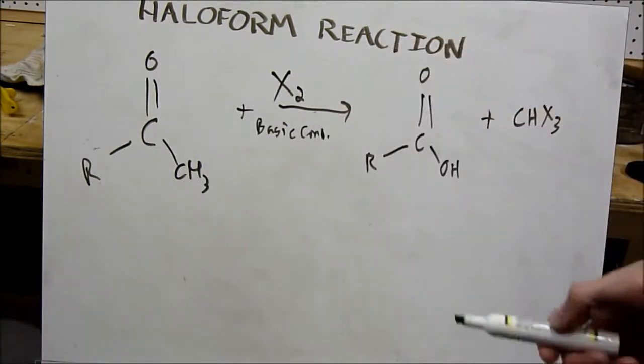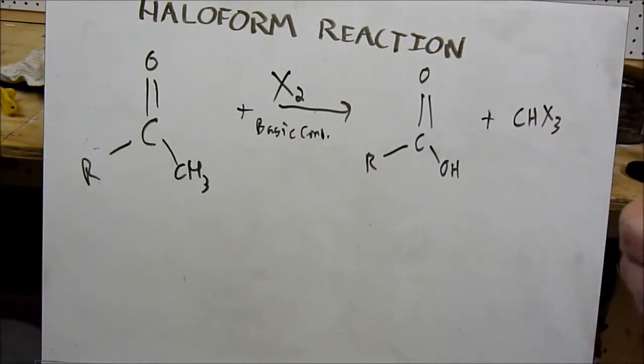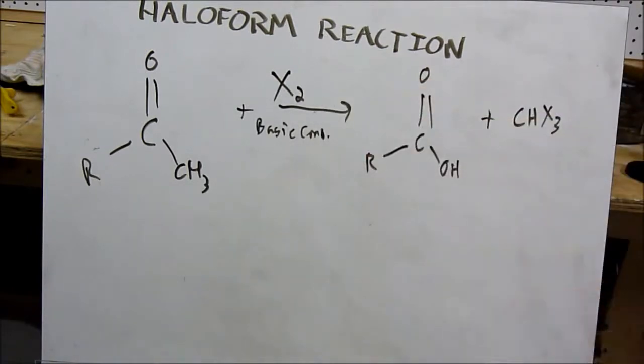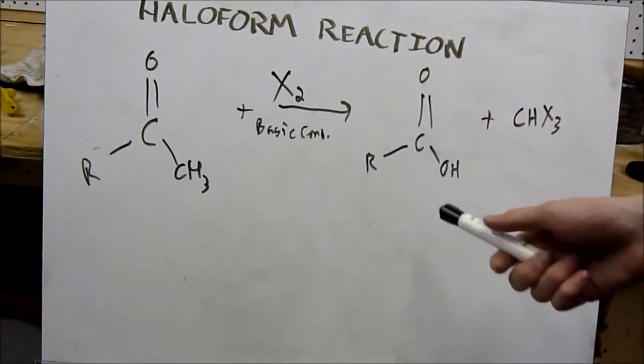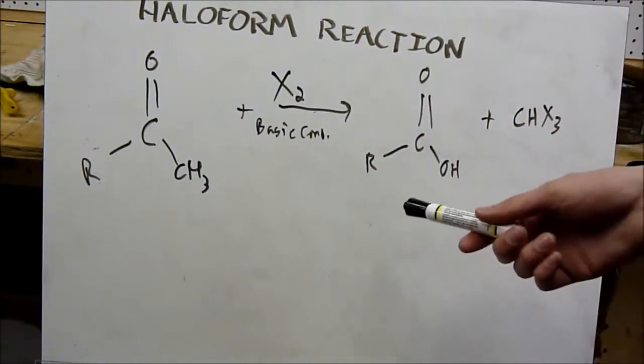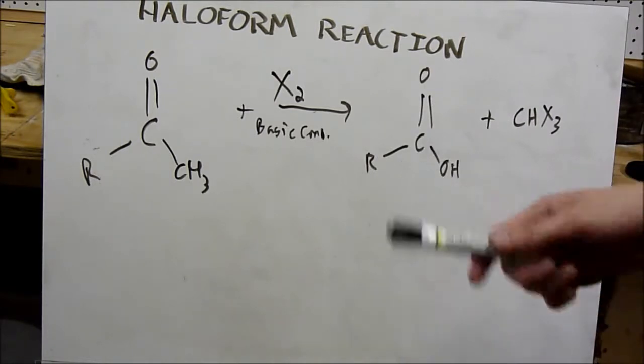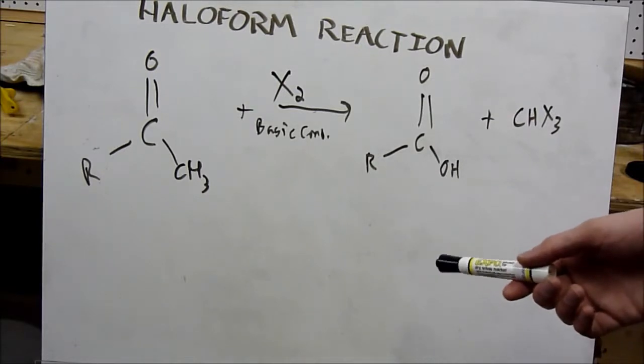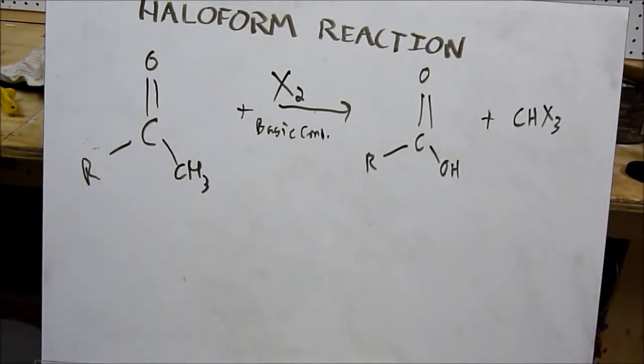This works with other halogens as well, such as iodine and bromine. It works with chlorine, iodine, and bromine, but not fluorine, because sodium hypofluorite or the hypofluorite ion is too unstable in water to remain for any length of time to perform this reaction. So fluoroform is made in a completely different way. However, iodoform, bromoform, and chloroform are all produced or can be produced in this method.